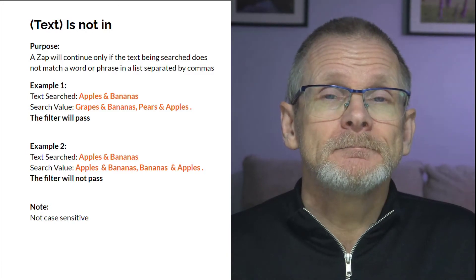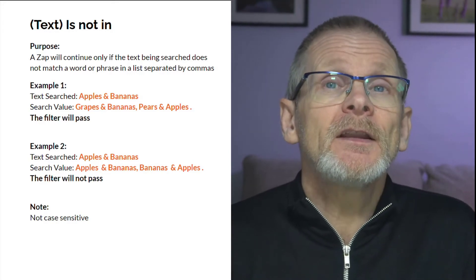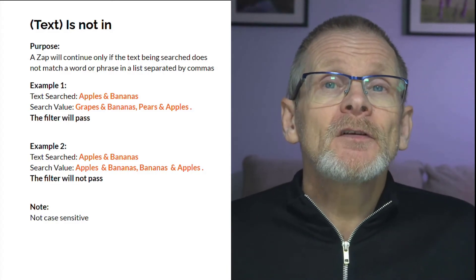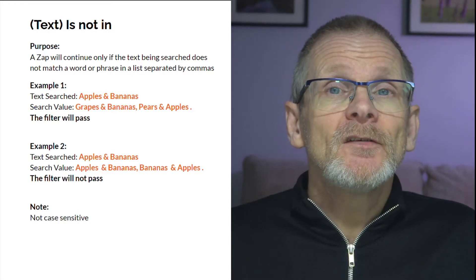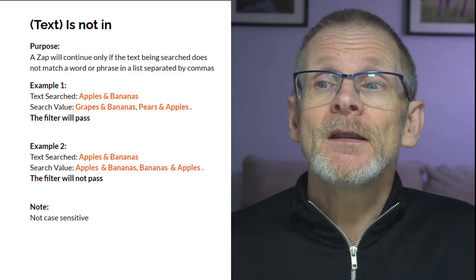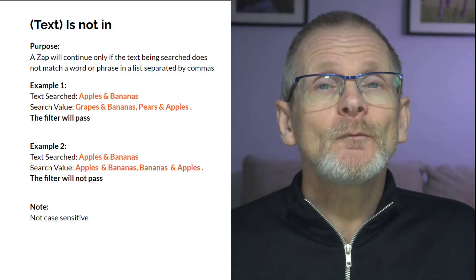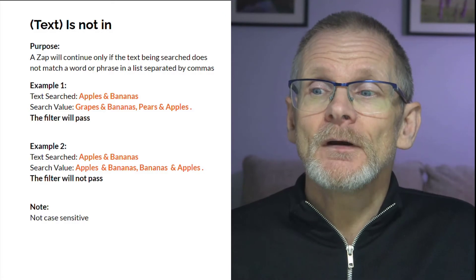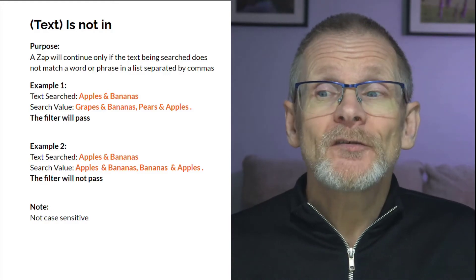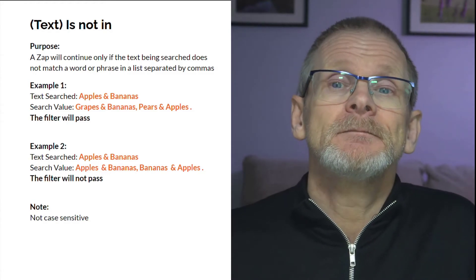'Text is not in' — the Zap will continue only if the text being searched does not appear in a list of items we're searching for. In example one, searching through 'apples and bananas' with a list of 'grapes and bananas' and 'pears and apples' — the filter passes because our text isn't part of those phrases. In example two, if the list contains 'apples and bananas', the filter won't pass because it does match one of the phrases. Not case sensitive.